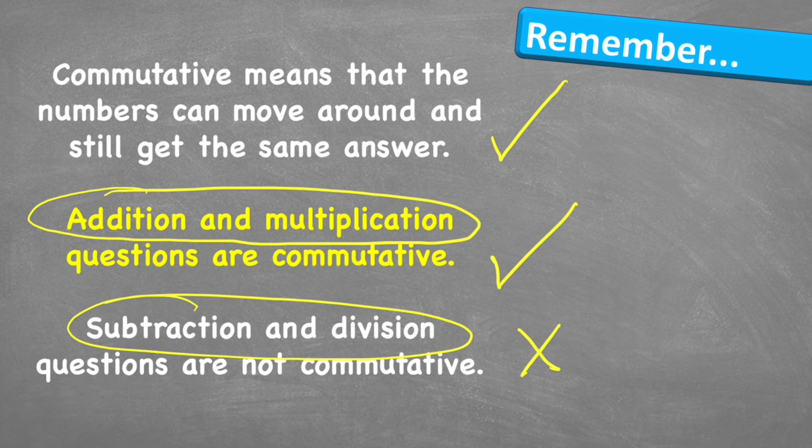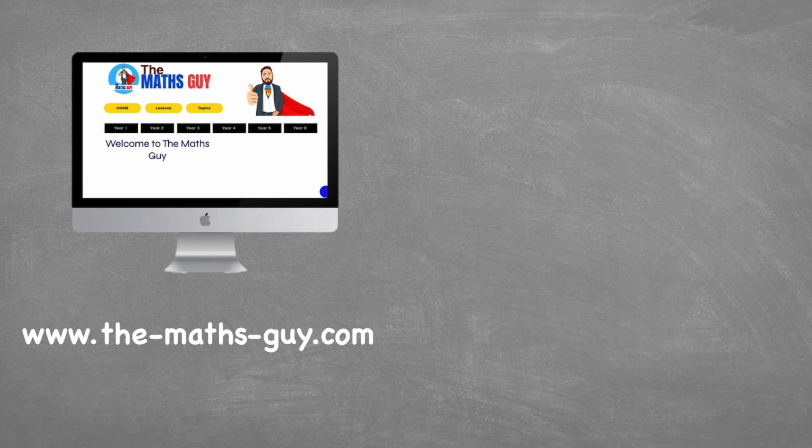But why is this important? Well, it gets really important when we start to use our written methods. So watch out for these little rules. And remember that when we see a question that's subtraction, we must do it in the right order. Whereas if we see an addition question, we can move the order of the question around. Really important law. Hopefully we can remember it. And there we go. That is the commutative property.